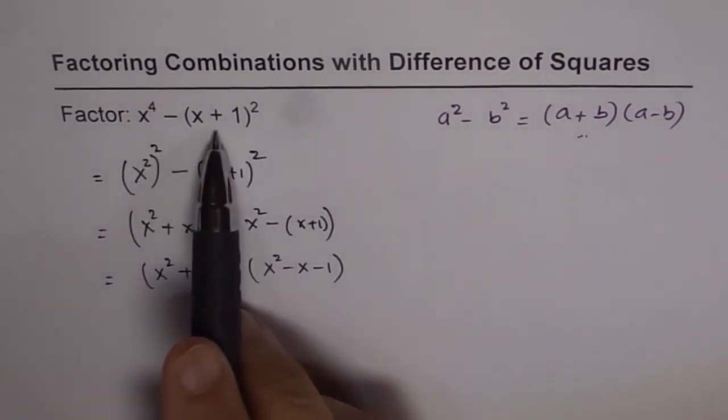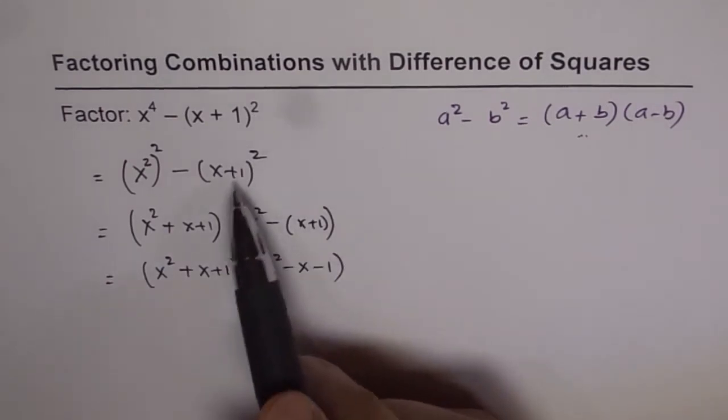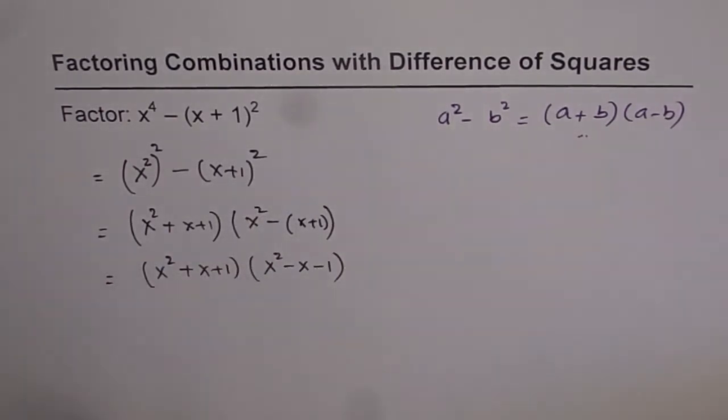We could take this expression as a square minus b square and then factor it out. So that is a good technique to know. Thank you.